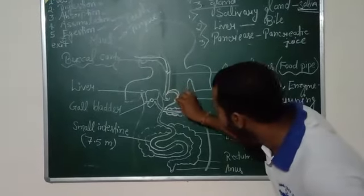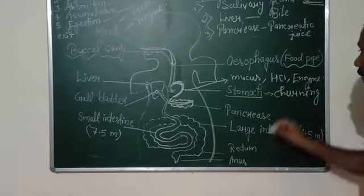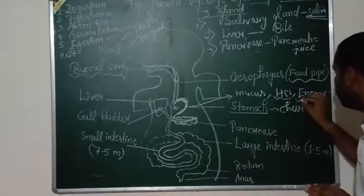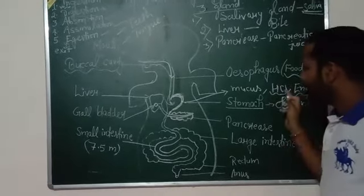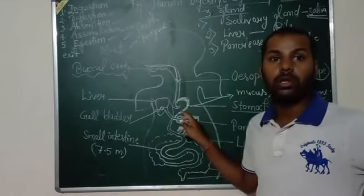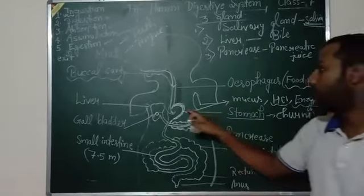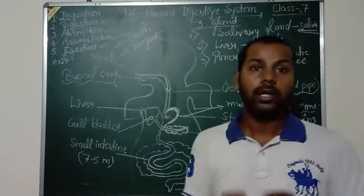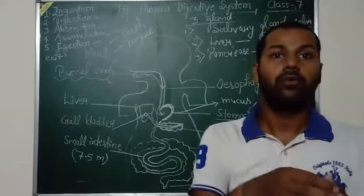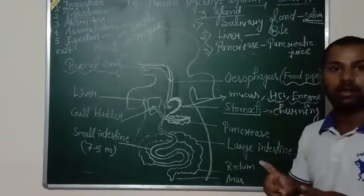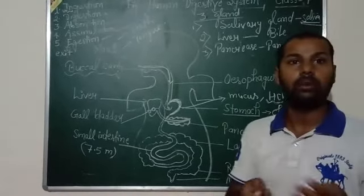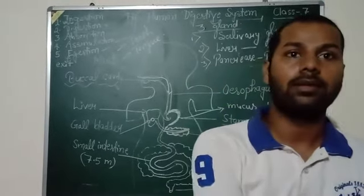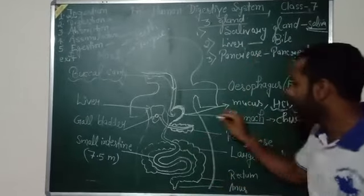In the lining of the stomach, mucus is present. Hydrochloric acid (HCl) is a strong acid and is necessary for enzymatic action. HCl does not damage the lining of the stomach due to the presence of the mucus wall, which protects the stomach. The function of HCl is to kill bacteria that pass with the food. The function of enzymes is to digest carbohydrates — they break complex carbohydrates into the simplest form — and they also break down proteins, digesting the food in the stomach.